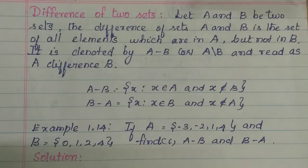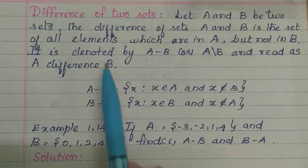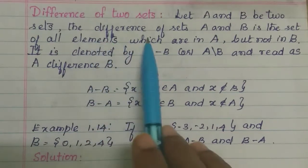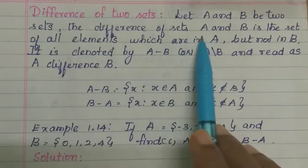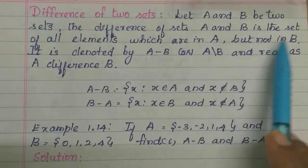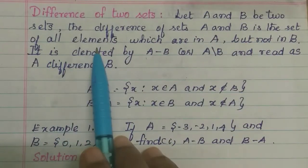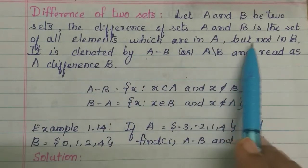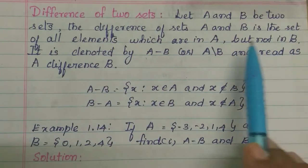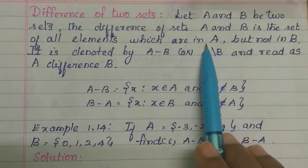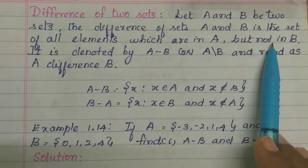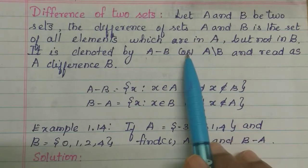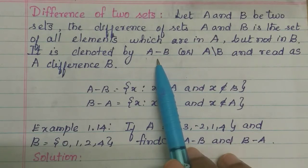The difference of sets A and B is the set of all elements which are in A but not in B. So A contains the element, but B does not contain the element. That is A minus B.